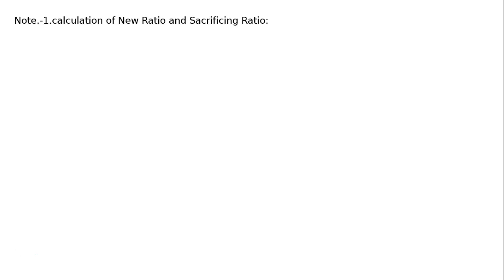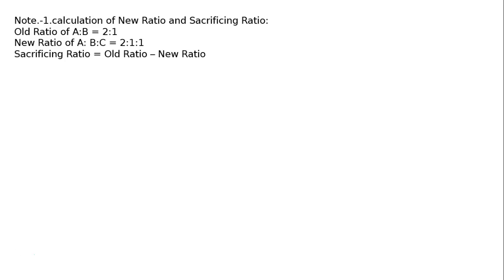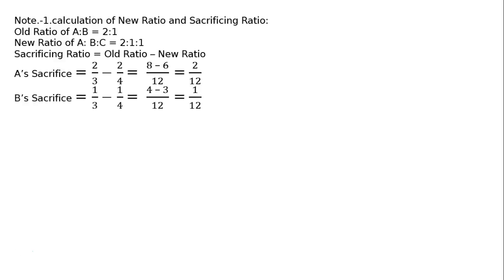Note 1: Calculation of new ratio and sacrificing ratio. Old ratio of A to B is 2:1. New ratio of A to B to C is 2:1:1 as given in the question. Sacrificing ratio equals old ratio minus new ratio. A's sacrifice: 2/3 minus 2/4, LCM 12 gives 8 minus 6 = 2/12. B's sacrifice: 1/3 minus 1/4, LCM 12 gives 4 minus 3 = 1/12. Therefore the sacrificing ratio of A to B is 2:1.